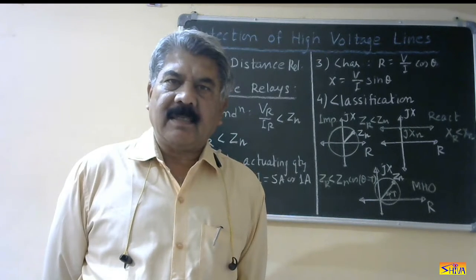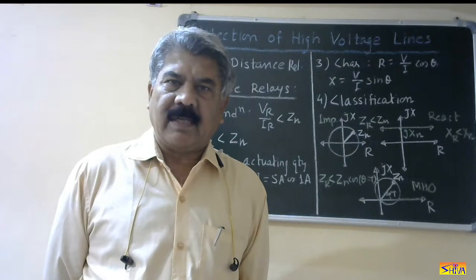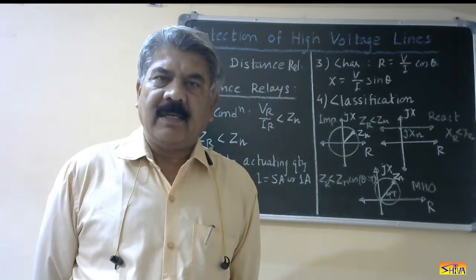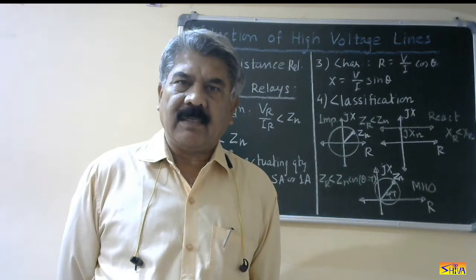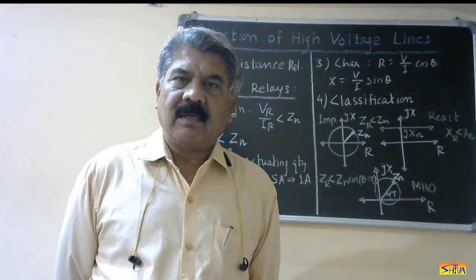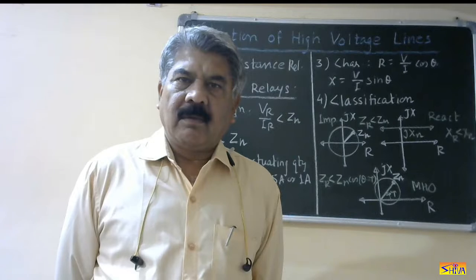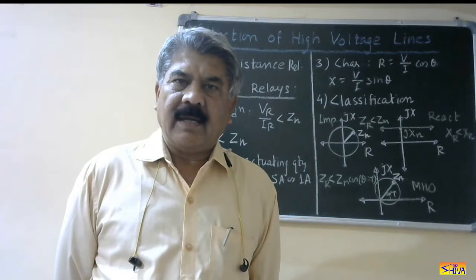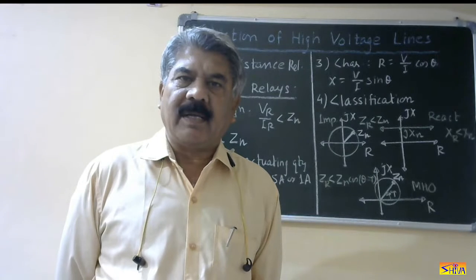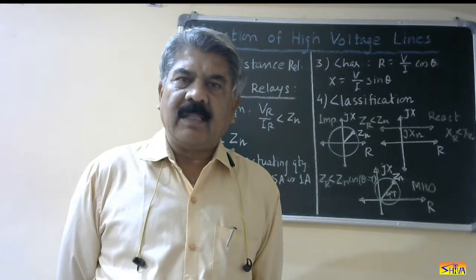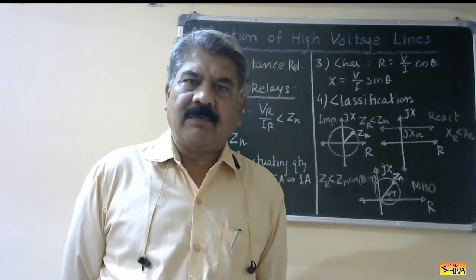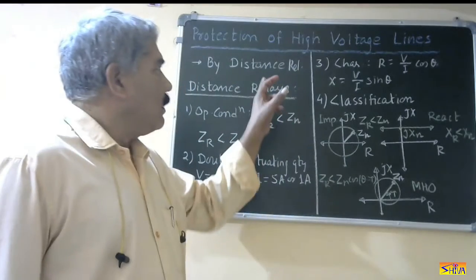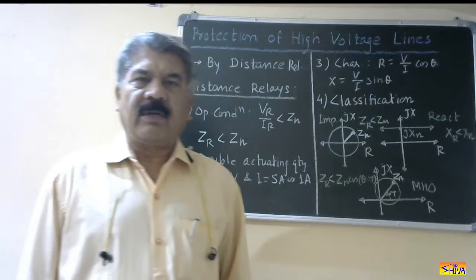In my last class, I had explained the requirements of protection system for high voltage lines. We have seen that for high voltage lines, we require a protection system which acts very fast, which provides effective backup protection, good selectivity, and can make arrangement to operate the circuit breaker at both ends simultaneously to retain the transient stability of the system. So if we look at all these requirements, we find that distance relay is the best relay for protection of high voltage lines.